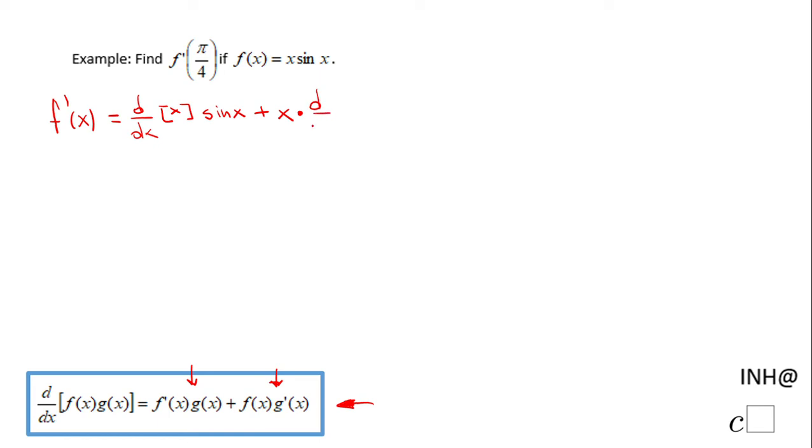Let's simplify this. The derivative of x is 1, so I have 1 times sin(x) plus x times the derivative of sin(x), which is cos(x). Simplifying further: f'(x) = sin(x) + x cos(x).